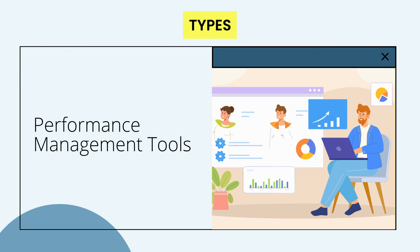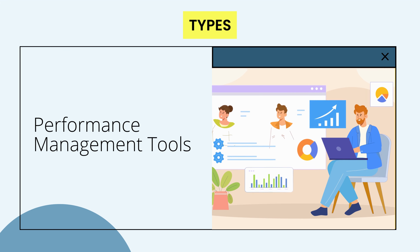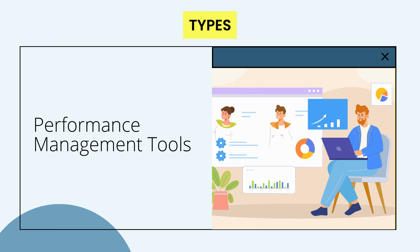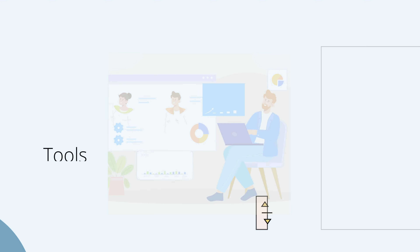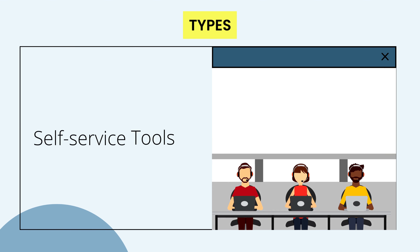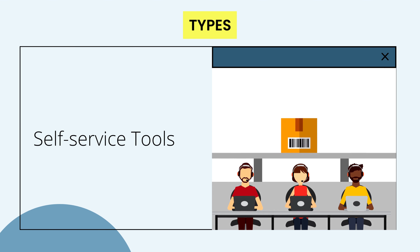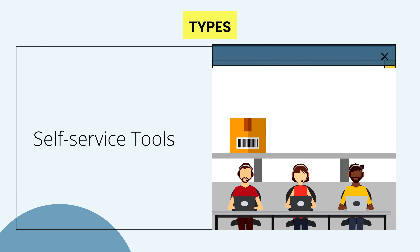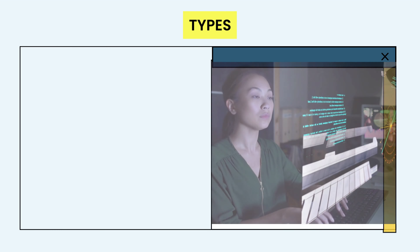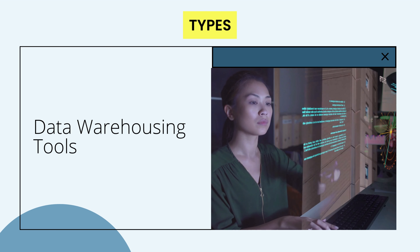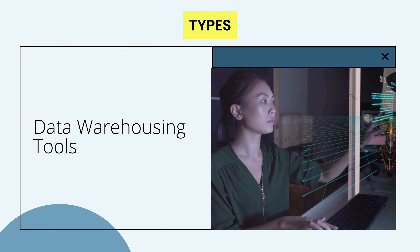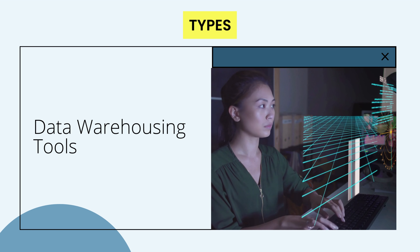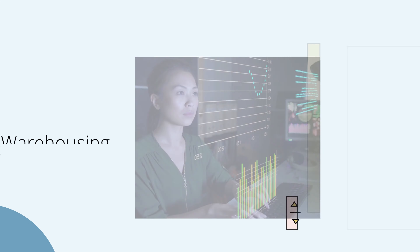Performance management tools are used by the senior management to measure target versus actual. Beginner-friendly self-service tools are specially designed for users with little to no technical expertise. Data warehousing tools consolidate organization-wide information and build a single source of truth.